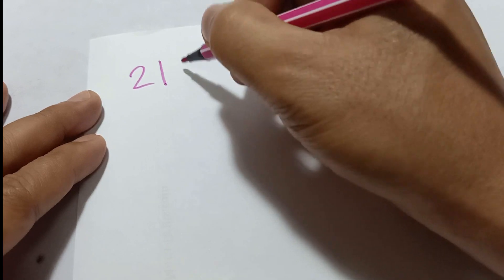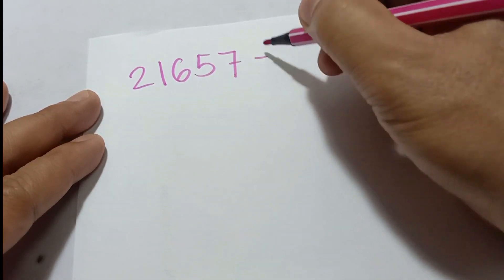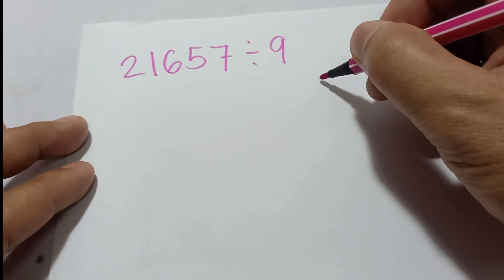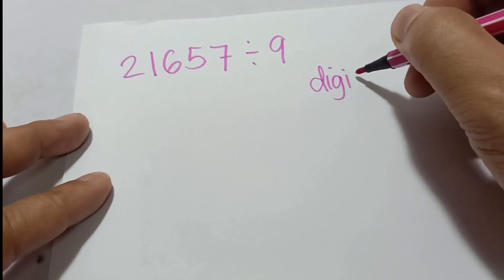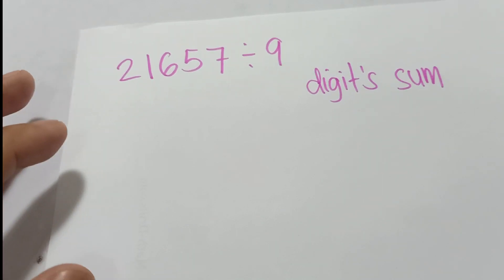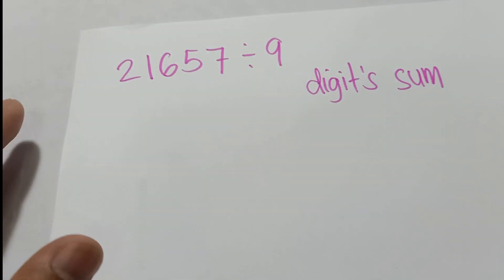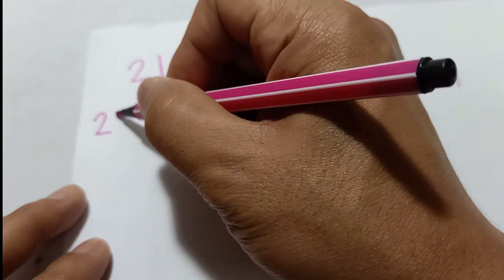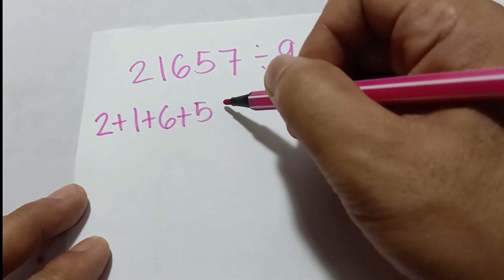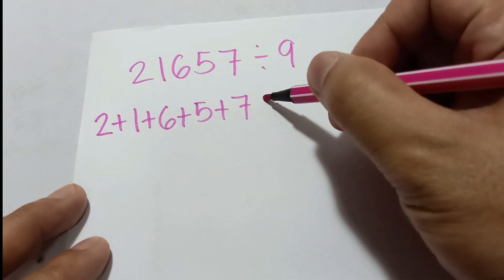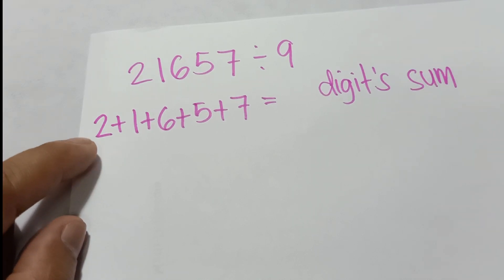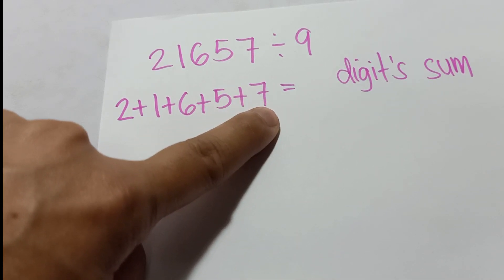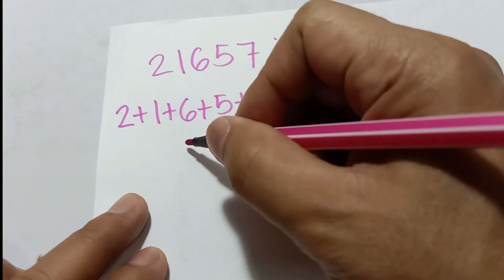For example, if I have 21,657 divided by 9, all you have to do is get the digit sum. The digit sum means you add all the digits: 2 plus 1 plus 6 plus 5 plus 7. So 2 plus 1 is 3, plus 6 is 9, plus 5 is 14, plus 7 is 21.